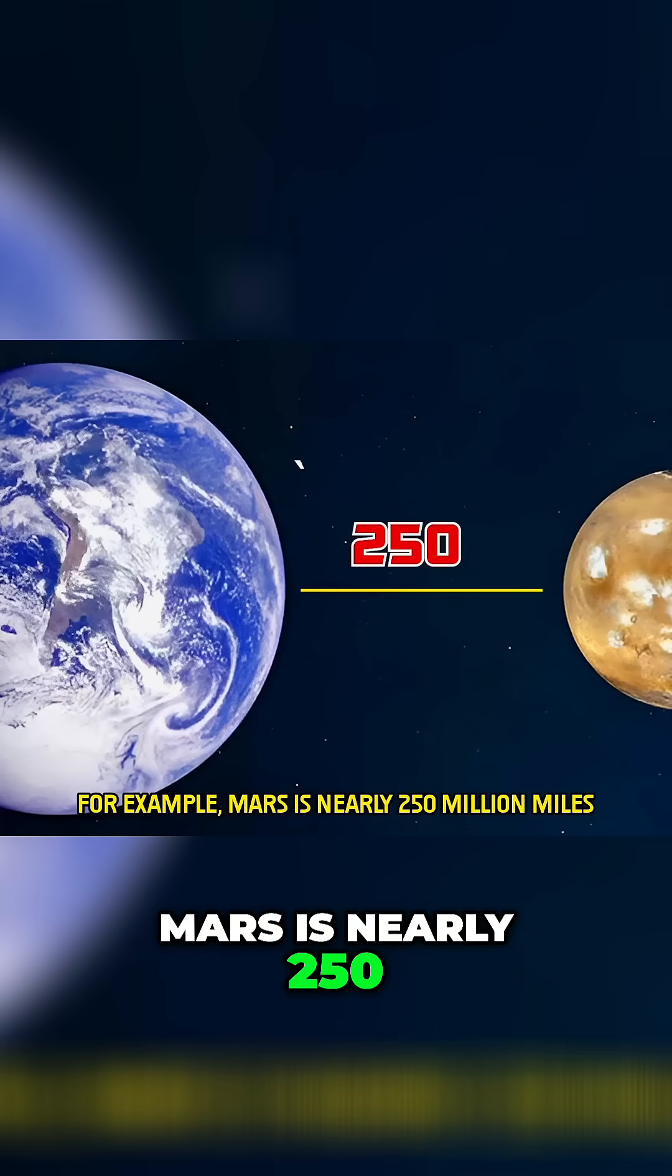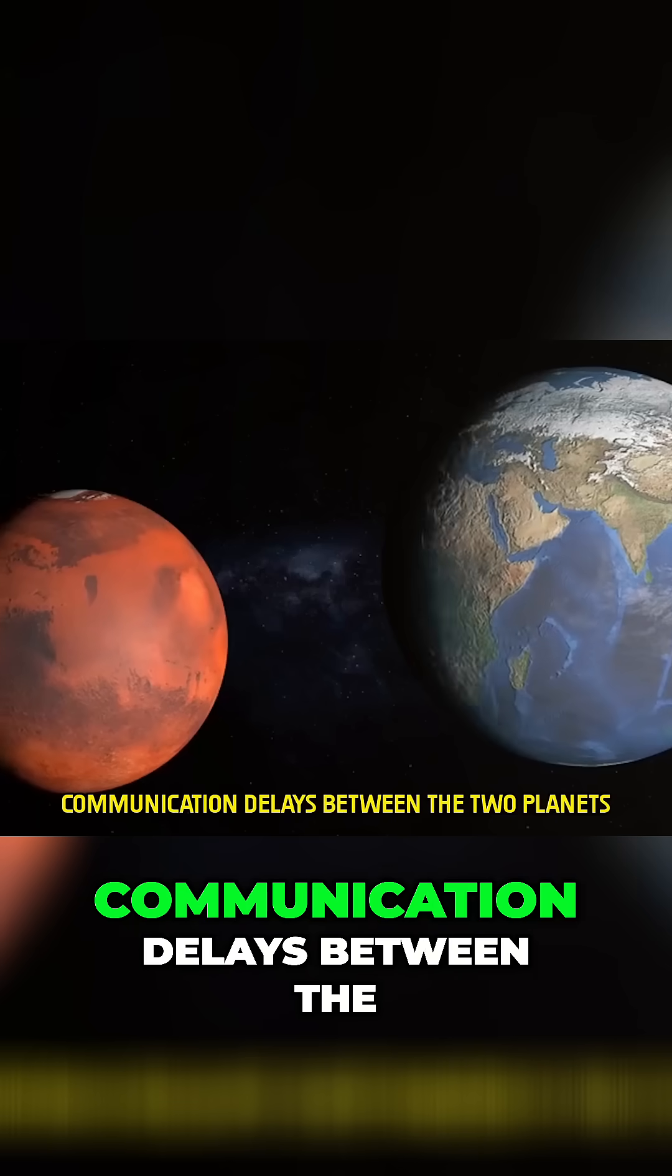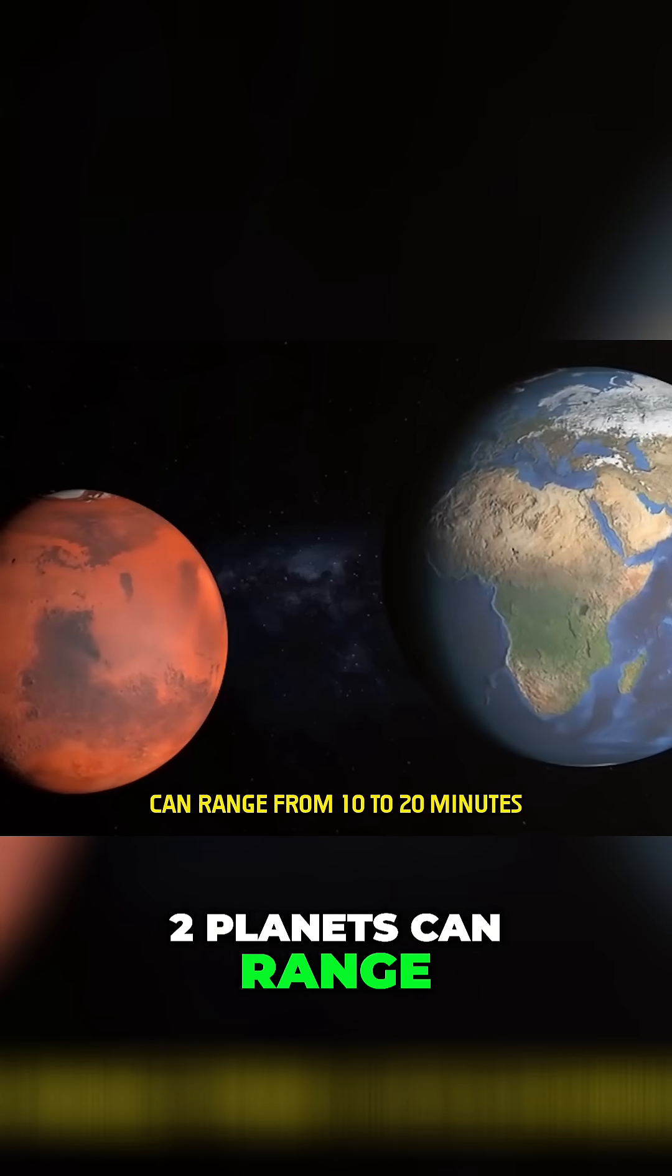For example, Mars is nearly 250 million miles away from Earth. Communication delays between the two planets can range from 10 to 20 minutes.